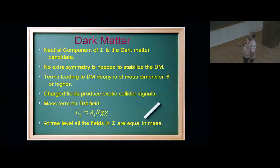Now let's talk about the dark matter in this model. The neutral component of this chi quintuplet is my dark matter candidate. It is interesting because I have taken a quintuplet, so I don't need to introduce any extra symmetry to stabilize the dark matter. All the terms that can lead to dark matter decay are either dimension 6 or higher. So at the universe timescale, my dark matter would be stable by itself. And these charged fields would produce very interesting collider signatures, which will be discussed in the next talk by Neil Lange.